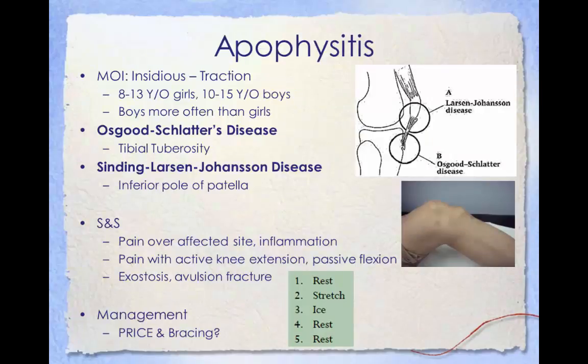Apophysitis conditions involve irritation and inflammation of the growth plates and are commonly seen in active children. The growth plates involved are called apophyses — cartilaginous growth plates found throughout a child's body that serve as attachment sites for muscles and tendons, unlike epiphyses, which are growth plates at the ends of long bones serving as sites for bone elongation. When a young athlete participates in repetitive activity requiring a particular muscle group such as the quadriceps in running or jumping, the weak link is the cartilaginous attachment site or apophysis. This tugging causes microscopic cracks in the cartilaginous growth plate, leading to inflammation and pain.